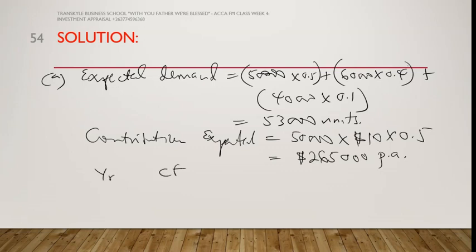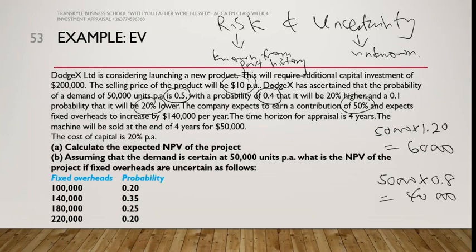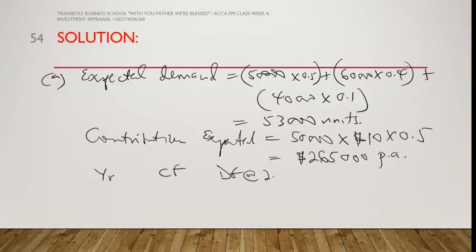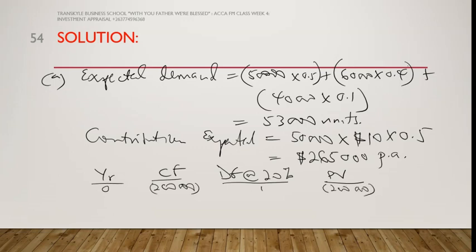We can now set up our NPV table with columns for year, cash flow, discount factor at 20% per annum, and present value. At year zero we have the initial investment of $200,000. For years one to four we have an annuity — the contribution of $265,000 per year — using the annuity factor at 20% for 4 years, which is 2.589. This gives a present value of $686,085.